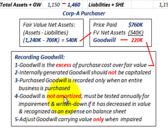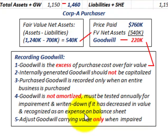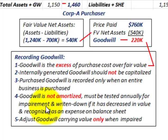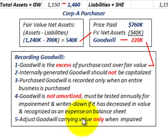Goodwill is not amortized. It must be tested annually for impairment and written down if it has decreased in value, recognized as an expense on the income statement — and this is what we're going to be doing here. You adjust goodwill's carrying value only when it's impaired; it just sits on the books and you'd only adjust it when you have an impairment.